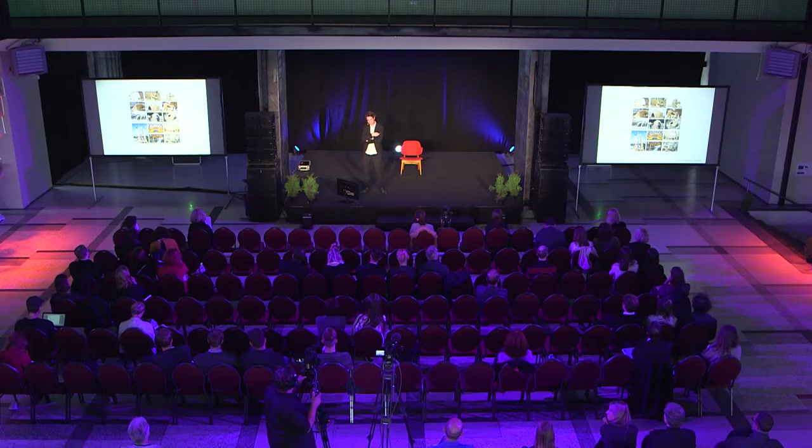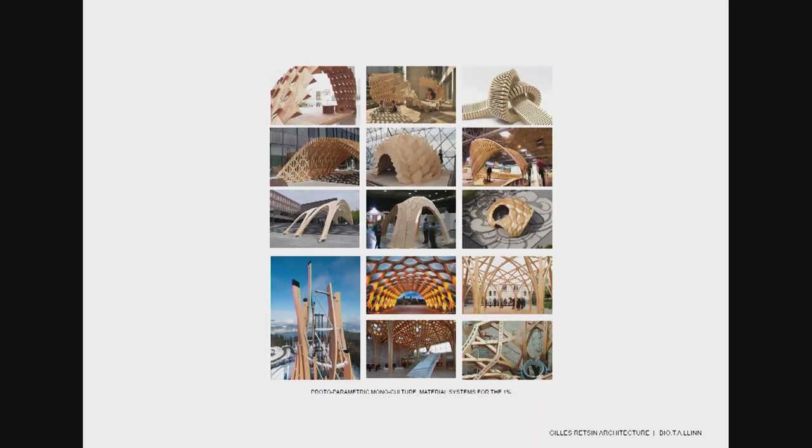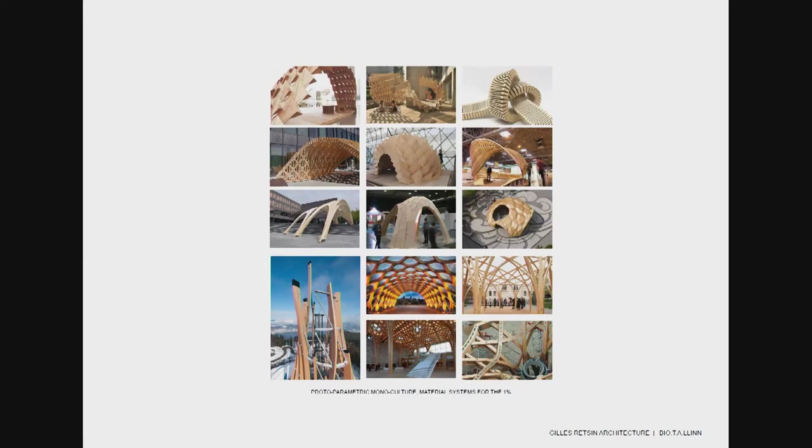If you look at the challenges we're facing as a profession today — the global crisis around housing, the 1% versus the 99% — you could make the argument that all these parametric pavilions cater for the 1%. They're there to build complex roofs for expensive museums, decorate the lobbies of banks, serve as marketing systems for universities. They're not addressing the 99% of the building stock. And if you observe this experimentation with the 1%, you also see they're all shells.